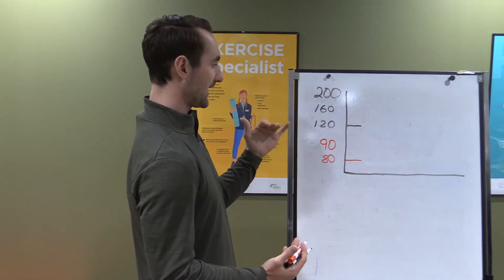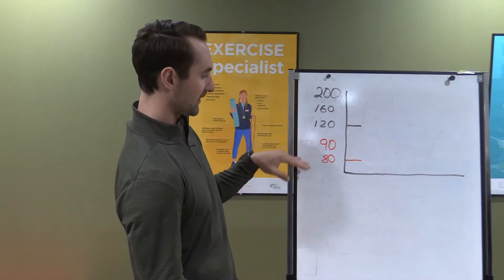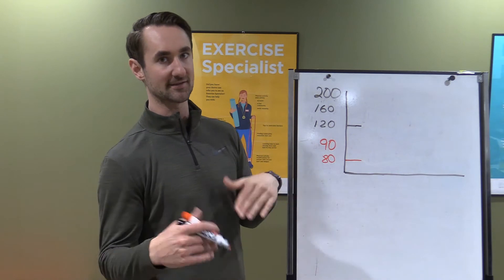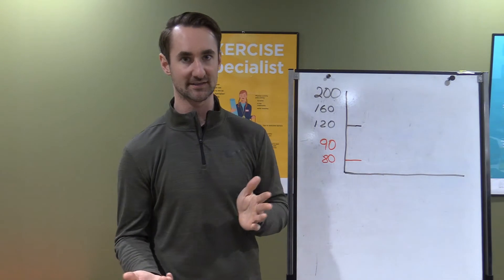An average, a pretty good average to shoot for would be 120 as the top number over 80 as the bottom number. Red is called the diastolic, that's the bottom number, and black is going to be the top number, that's systolic.